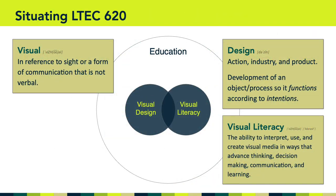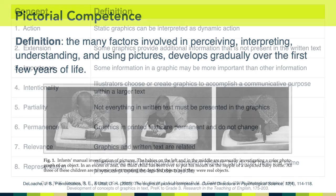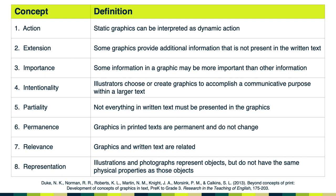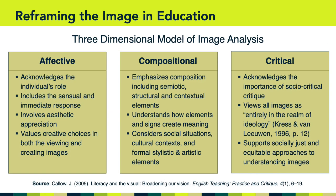On the visual literacy side, we learned that visual literacy is the ability to interpret, use, and create visual media in ways that advance thinking, decision-making, communication, and learning. We learned that humans aren't born knowing how to understand and make sense of visual representations — that's something we all have to learn and develop over time. There are actually many underlying concepts necessary for someone to be able to interpret, use, and create visual media in meaningful ways. We also learned that as consumers and producers of visual media, we can step back and think about the various functions visual representations play in relation to text, and that to be prepared for today's visual society, we should be able to analyze visual content from multiple perspectives: the affective, compositional, and critical.